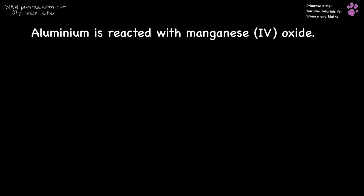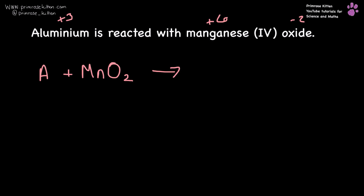Aluminium is reacted with manganese(IV) oxide — manganese is plus four, oxygen is minus two. So aluminium reacts with MnO2. We're going to get aluminium oxide, Al2O3, and then manganese left over at the end. Now if we're going to balance that, I'm going to need to put a two in front of the aluminium.